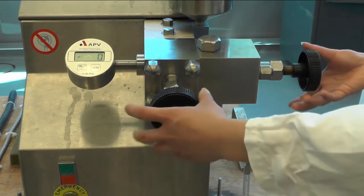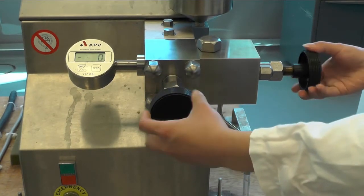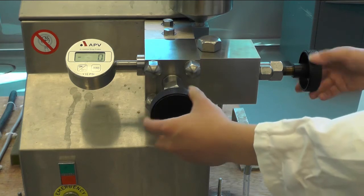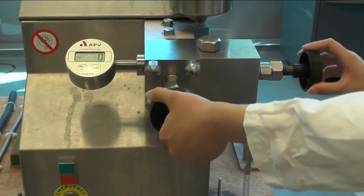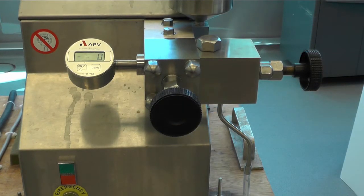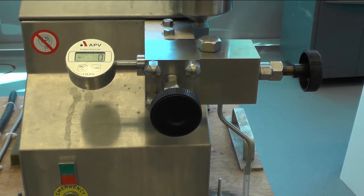Turn both of the hand wheels counter-clockwise to open the homogenizing valve. Make sure the homogenizing valve is open prior to running the machine, otherwise damage to both the machine and the operator can occur.